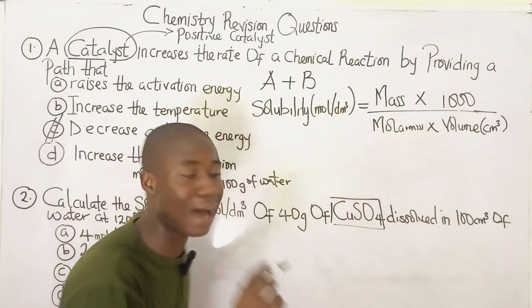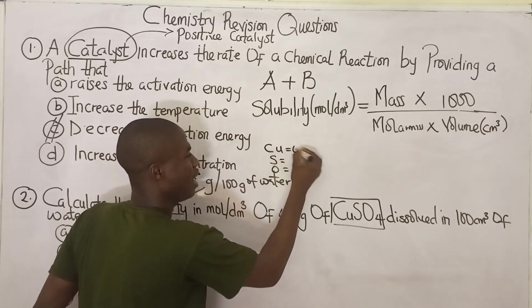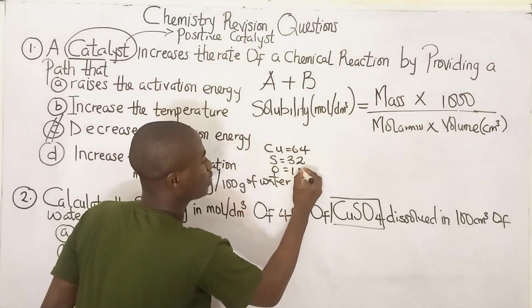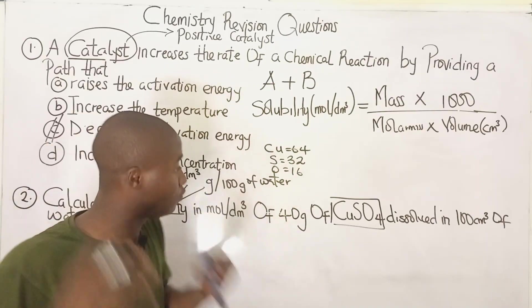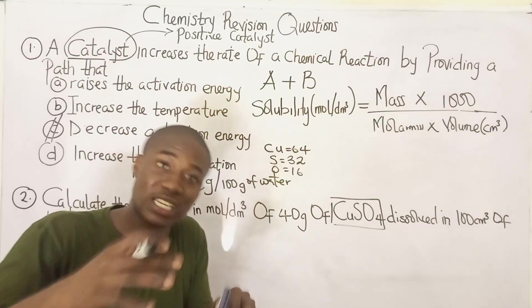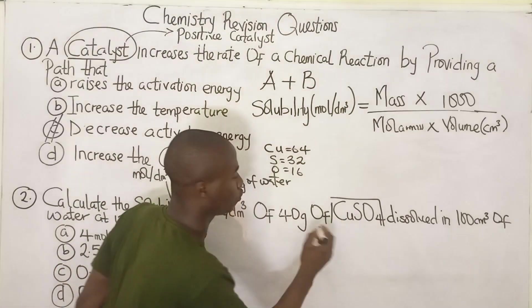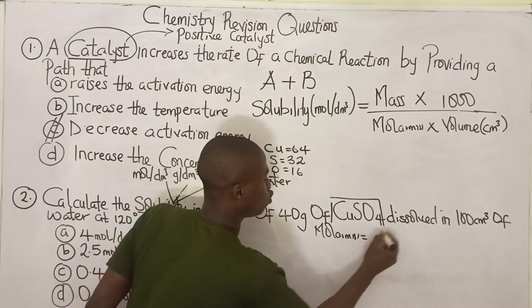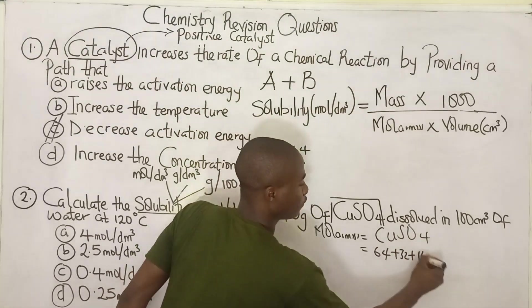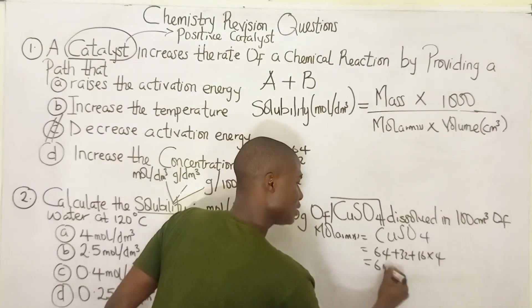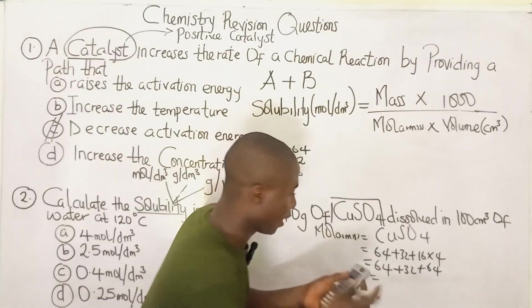The compound given in this question is CuSO₄. The elements involved are copper, sulfur, and oxygen. Their atomic masses are: copper = 64, sulfur = 32, and oxygen = 16. Knowing these atomic masses is very important. Let's calculate the molar mass of CuSO₄: 64 + 32 + (16 × 4) = 64 + 32 + 64 = 160 g/mol.